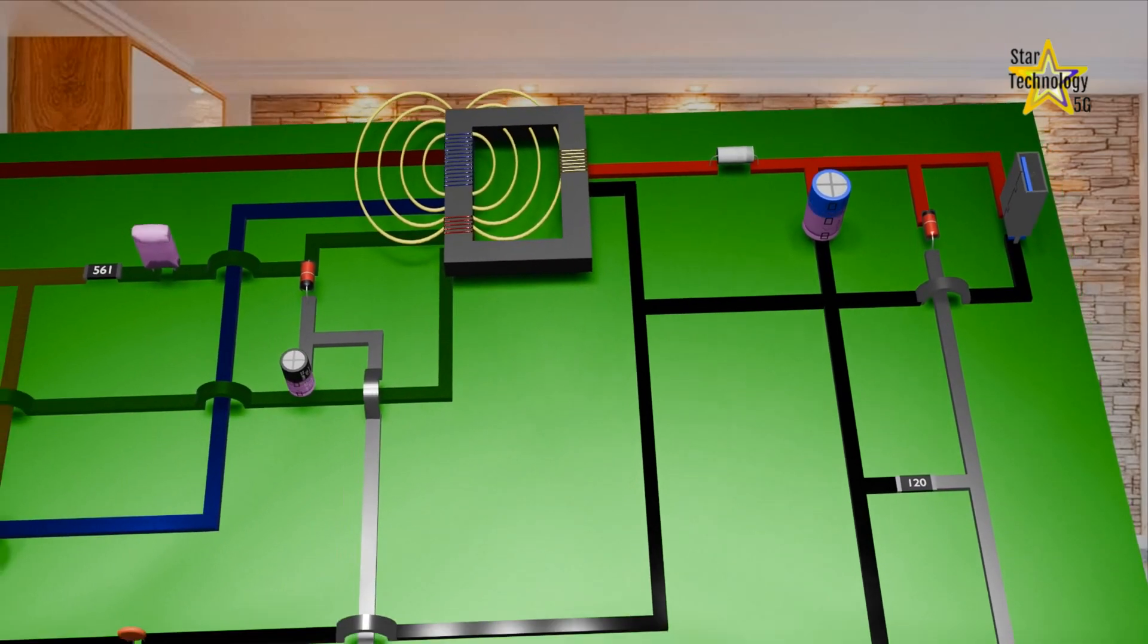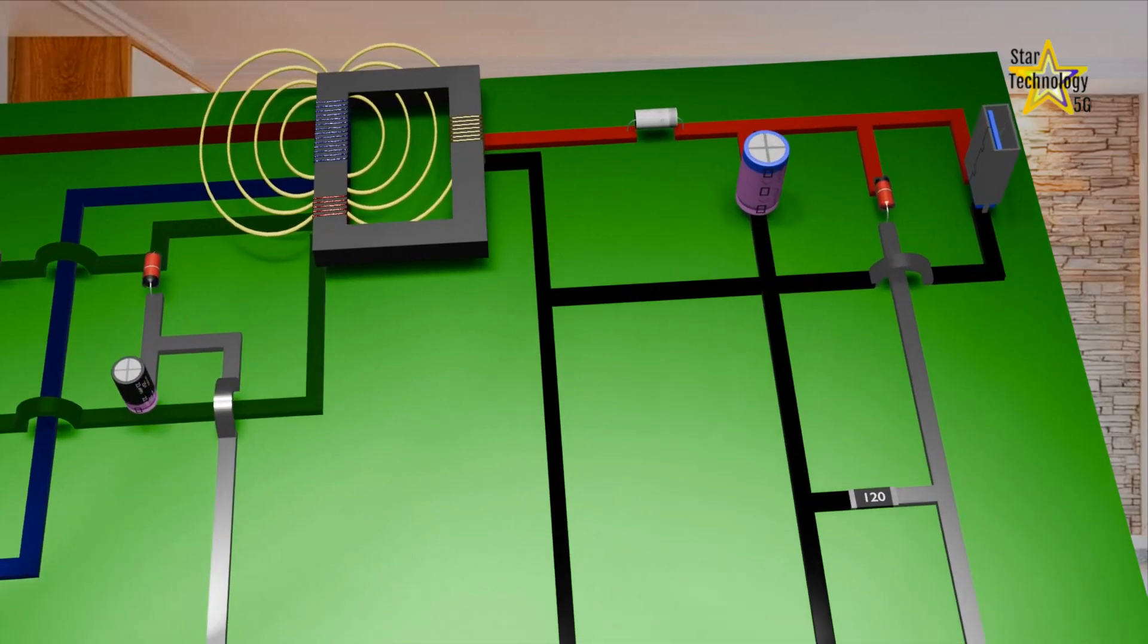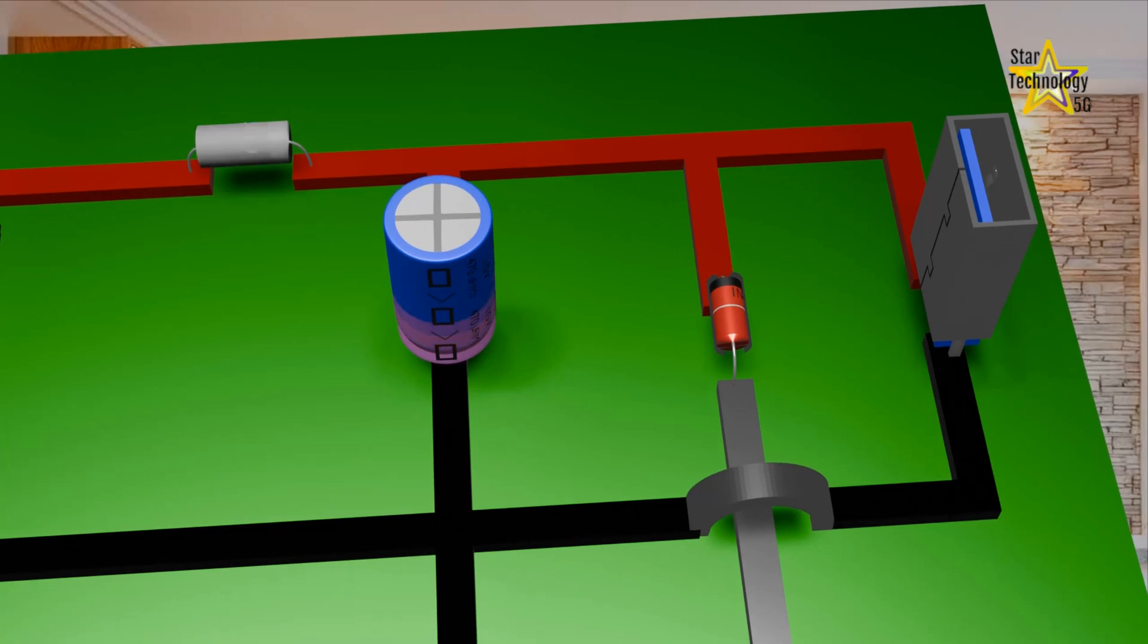But what if the voltage is more than 5 volts? We have a feedback circuit. As we reach 4.2 volts the Zener diode turns on allowing the current to flow to the optocoupler. It also drops the voltage by 4.2 volts.